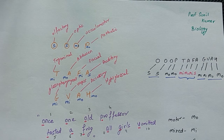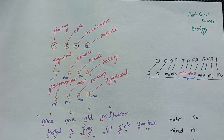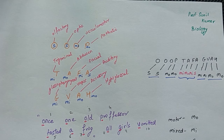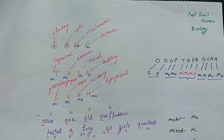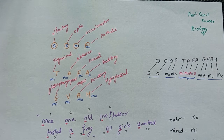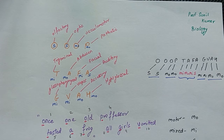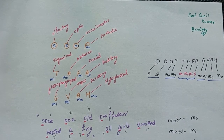Number one: olfactory — sensory. Number two: optic — sensory. Number three: oculomotor — motor. Number four: trochlear (pathetic) — motor. Number five: trigeminal — mixed. Number six: abducens — motor. Number seven: facial — mixed. Number eight: auditory — sensory. Number nine: glossopharyngeal — mixed. Number ten: vagus — mixed. Number eleven: accessory — motor. Number twelve: hypoglossal — motor.